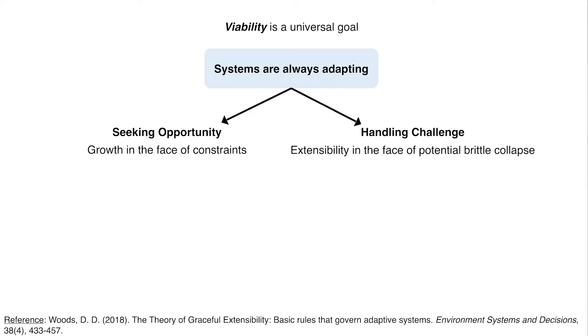There are two basic forms of adaptation we're going to center on. One is handling challenge. Whatever the activity, however it's configured to provide value, challenges will arise. We will cover what's called extensibility, given the potential for brittle collapse. There are boundaries to what we can do — our range of adaptive behavior has limits. Given those limits, and that challenges will occur at those boundaries, we have to have some ability to extend or stretch our performance at the boundaries. That form of extensibility will be central in what we explore.